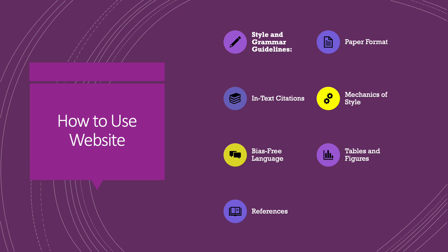Under the Style and Grammar Guidelines section of the website, there are subtopics: paper format, in-text citations, mechanics of style, bias-free language, tables and figures, and references. These provide every aspect of information a writer would need to format papers in APA Style.